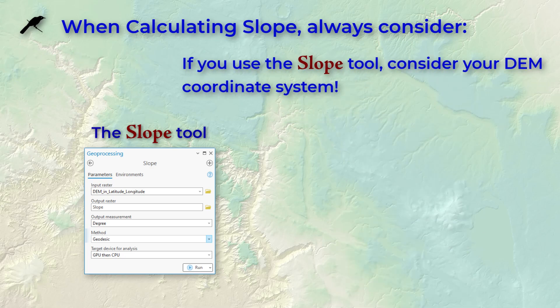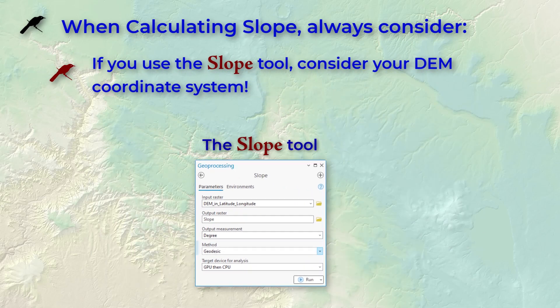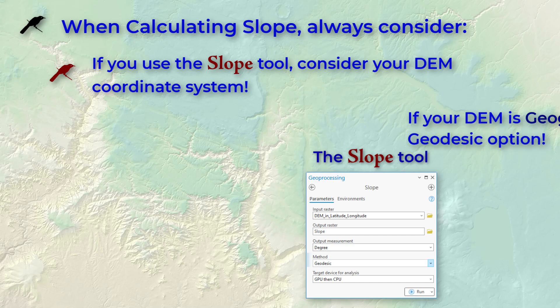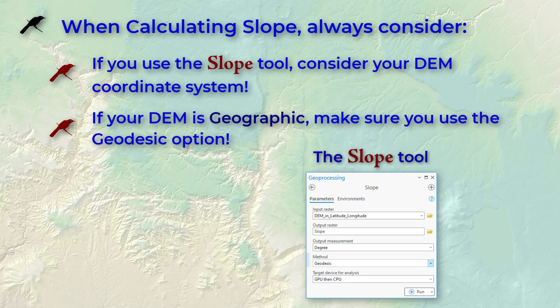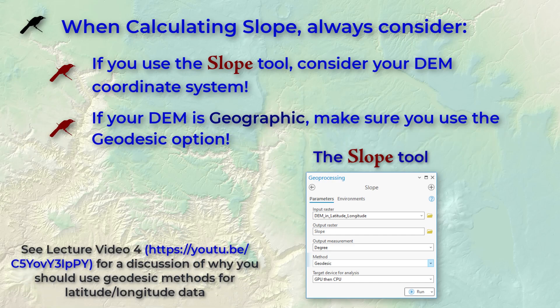If you're using the slope tool — the original one — you must take care if your DEM raster is in geographic or latitude-longitude coordinates. In this case, you must use the geodesic option in the tool. Otherwise, you've got to project your DEM before you calculate slope.